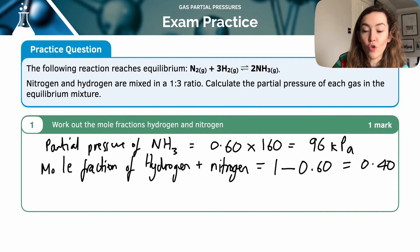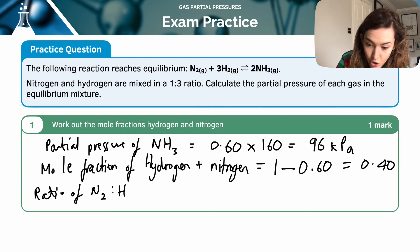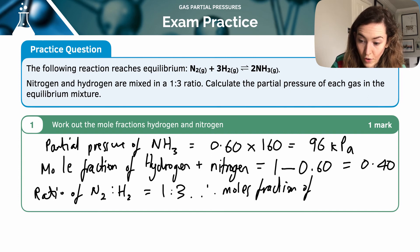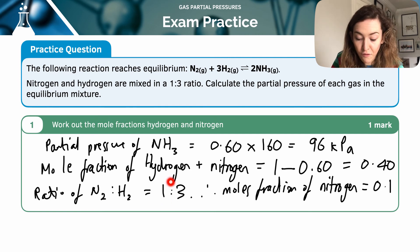So the ratio, we've been told that my ratio of nitrogen to hydrogen is 1 to 3. I was given that in the question. Therefore, the mole fraction of nitrogen must be 0.1. Because out of four parts, I've got 0.4 available and three parts of that is hydrogen and one part is nitrogen. Therefore, the hydrogen must be 0.30 and the leftover must be 0.10 or 0.1.